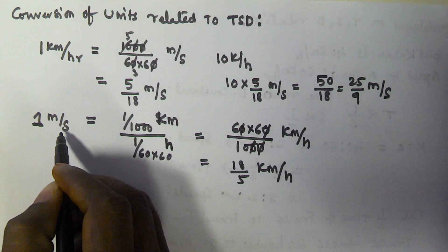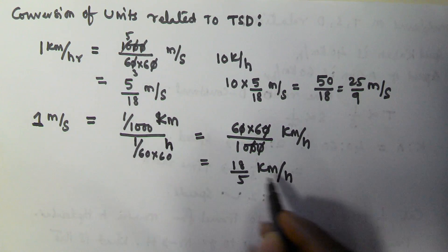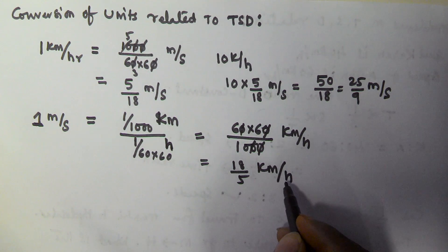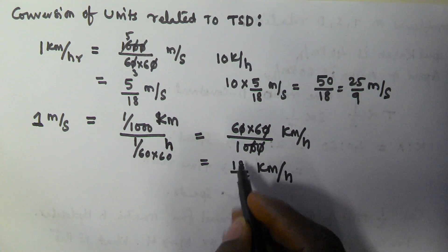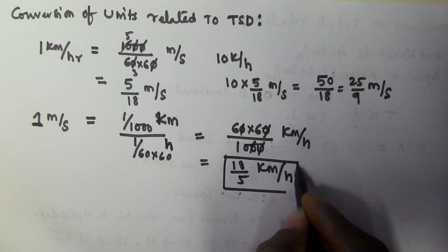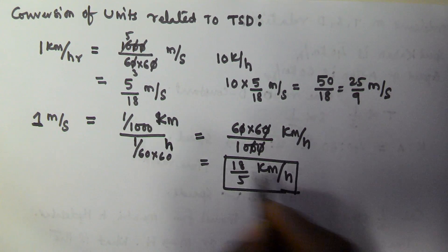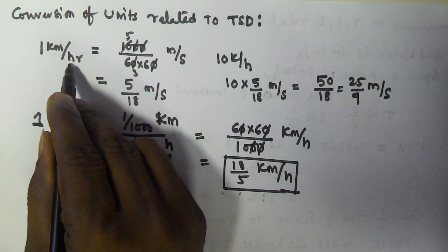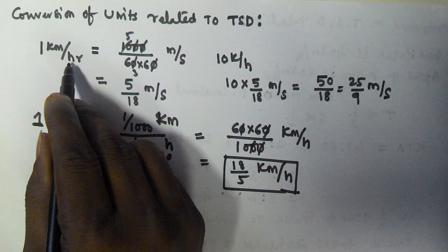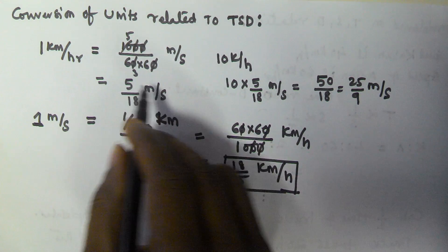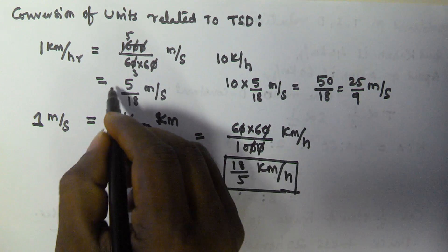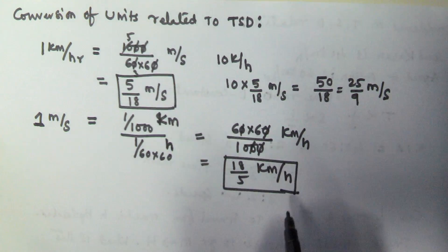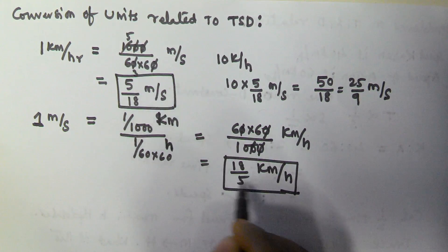So if your speed is in meters per second and you want to convert into kilometers per hour, multiply by 18 by 5. And if your speed is in kilometers per hour and you want to convert into meters per second, multiply by 5 by 18 — simply reverse.